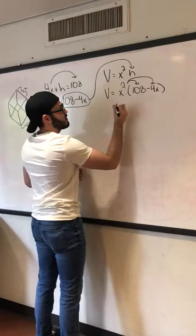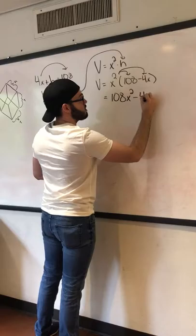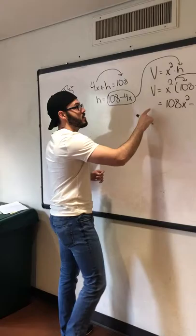So now we do just a little bit of distribution. So we have 108X squared minus 4X cubed. Now we have our volume equation in terms of X.